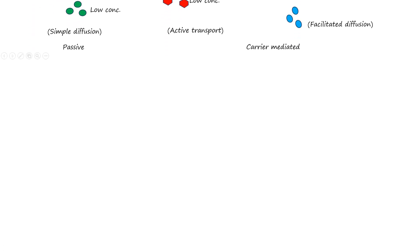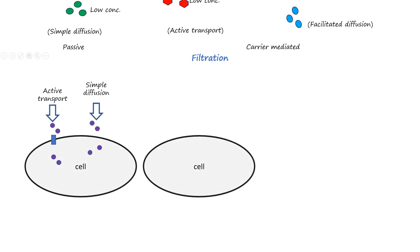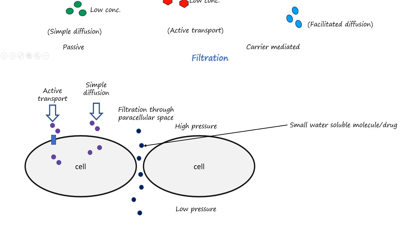Filtration is the movement of drugs through small pores or spaces between cells known as paracellular spaces. This typically happens in capillaries where a pressure gradient pushes small molecules through. Only small, water-soluble drugs can pass through these pores, as they are too tiny for larger molecules. The kidneys rely on filtration to remove drugs from the blood during excretion. We can appreciate membrane transport as we learn about drug solubility in blood, protein, and fat when studying distribution, metabolism, and elimination as pharmacokinetic principles. Key drug properties to note include lipid solubility, water solubility, size of the drug molecule, and drug concentration gradient.